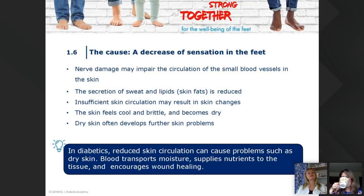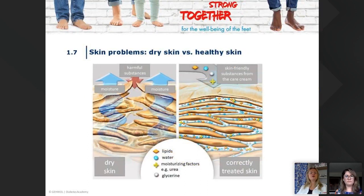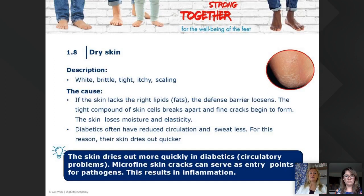On the right-hand side you see healthier skin, and on the left, the broken skin we see a lot with diabetic clients. They lose moisture in the dry skin. With good creams, you can try to address that. You can recognize dry skin by white brittleness, tight, itchy, and scaling appearance. The skin dries out more quickly in diabetics because of circulatory problems, and micro-fine skin cracks serve as entry points for pathogens, resulting in inflammations.